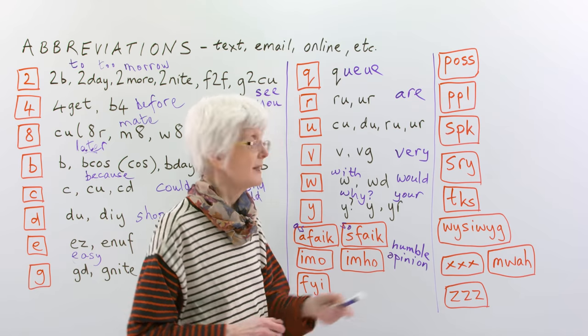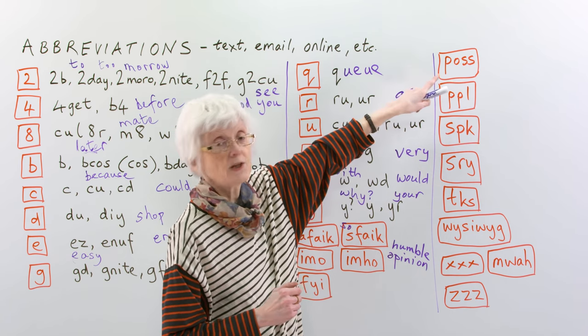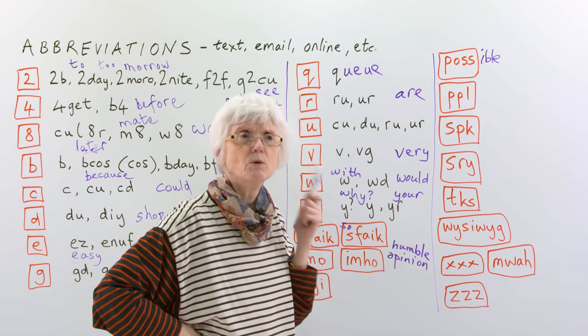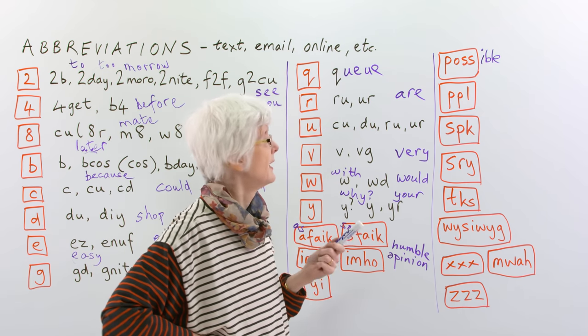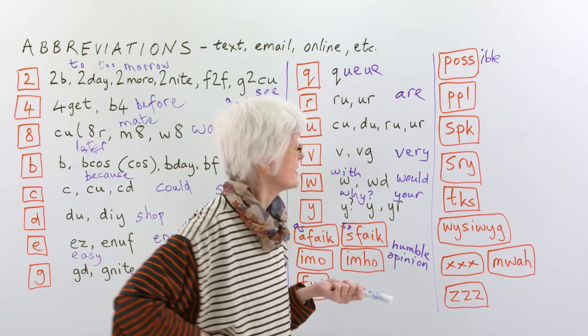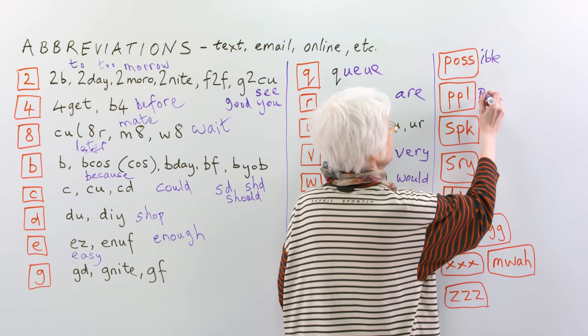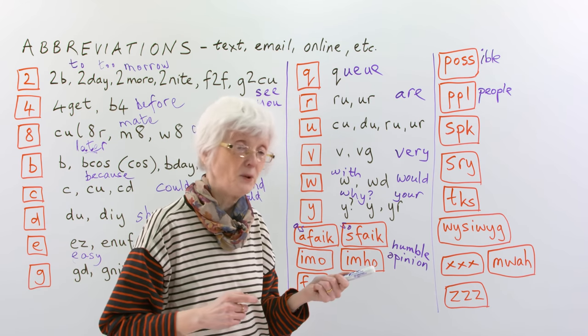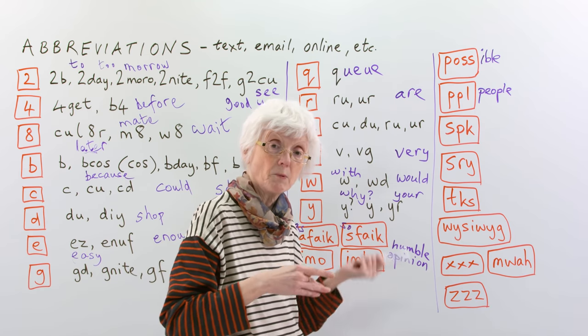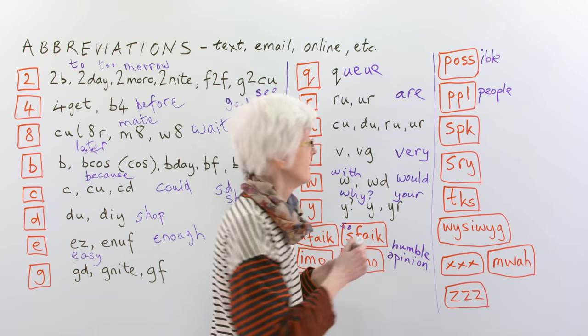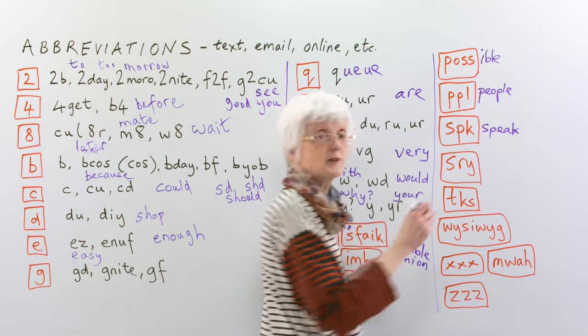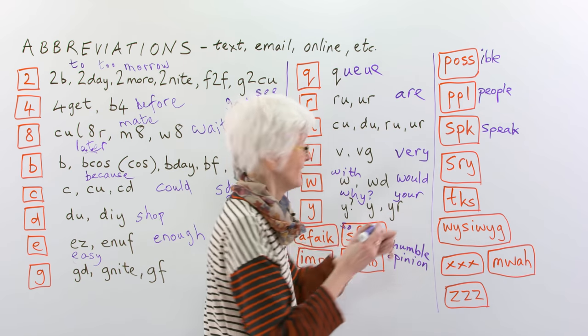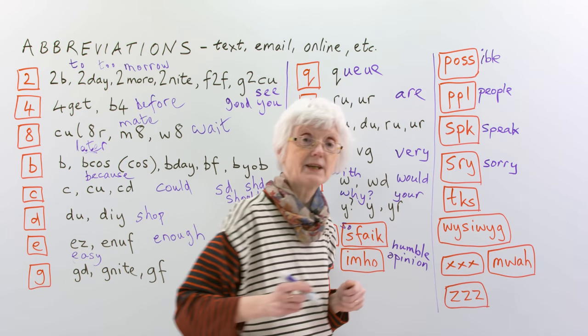So, then just finally, the third column. You can probably guess that this is short for possible. Possible. Just pos. PPL. That was one I didn't understand for a long time and then I suddenly realized, ah, it's... What do you think it is? It's people. People. P-p-ple. It's just the PPL. People. And then this one also is probably quite easy to guess. Speak. Speak. Speak. And this one you can probably guess. Sri. Sri. Sorry. Sorry. Sorry. When you're saying sorry to somebody.